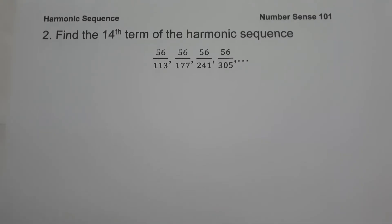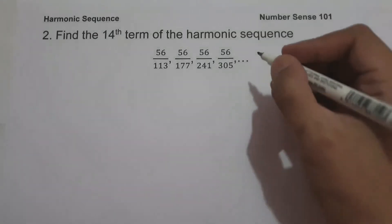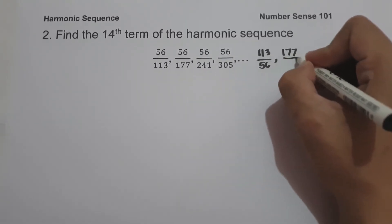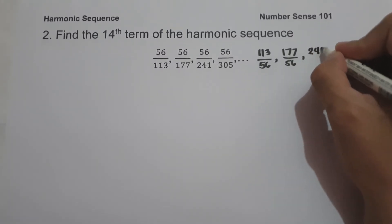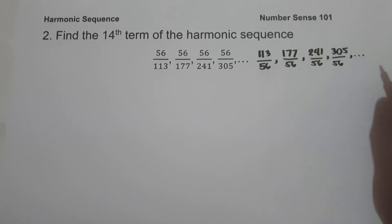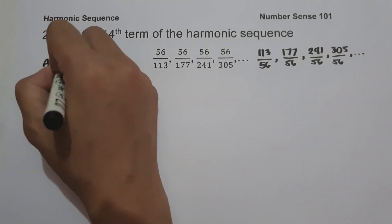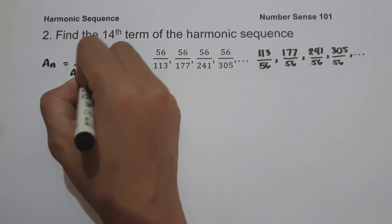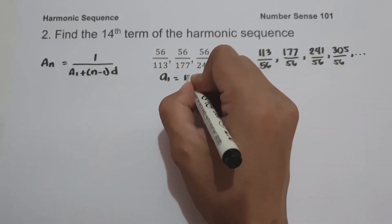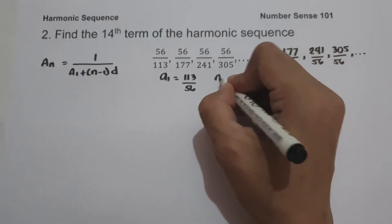On example number 2, find the 14th term of the harmonic sequence 56/113, 56/177, 56/241, 56/305. The reciprocals of each term are 113/56, 177/56, 241/56, and 305/56. Using the formula a sub n equals 1 over (a sub 1 plus quantity n minus 1 times d), we have a sub 1 equals 113/56 and n equals 14.